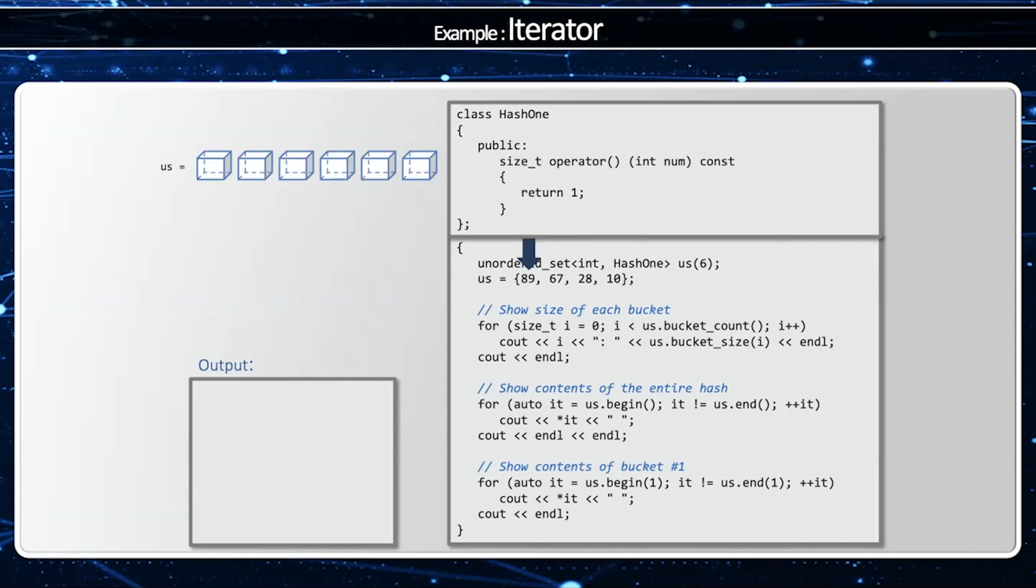Then I'm going to insert 89. Well 89 hashed always gives me one so I'll put it in bucket one and then 67 which will go after 89 and then 28 after 67 and then 10 after 28. Notice this hash function is really poor. I'm not utilizing five of the buckets. I'm only using bucket one.